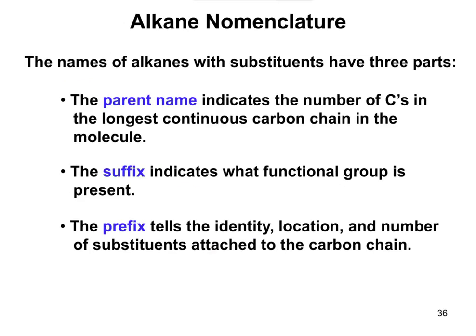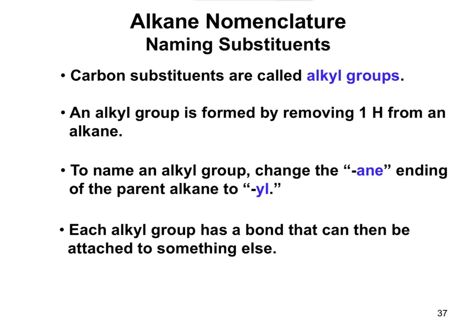When naming organic molecules, we look at different parts. There's a parent name that tells you how many carbons are in the chain, a suffix that describes the functional group present - whether it's an alkane, carboxylic acid, or ester. The prefix tells us about the identity, location, and number of substituents attached to the carbon chain. The best way to understand nomenclature is just to practice it repeatedly, which we'll do at the end of this video.